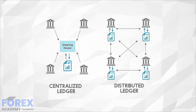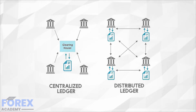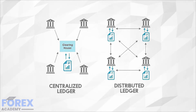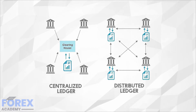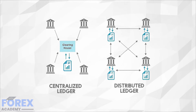Each participant node of the network works independently from one another. The distributed ledger technology ensures that each node updates independently. The nodes vote on each update to ensure that the majority of the nodes agree with the conclusion reached. This voting process is called consensus.